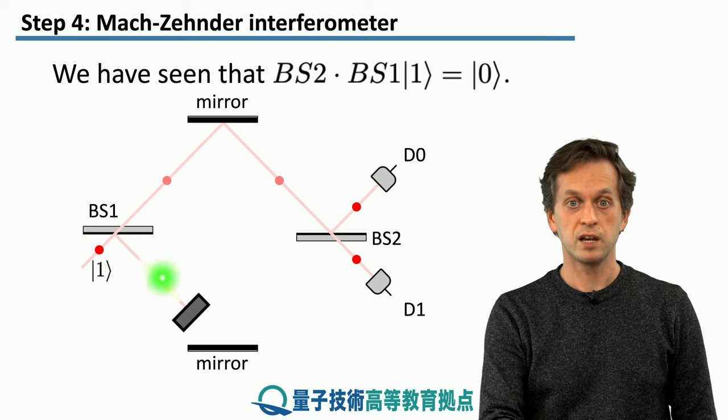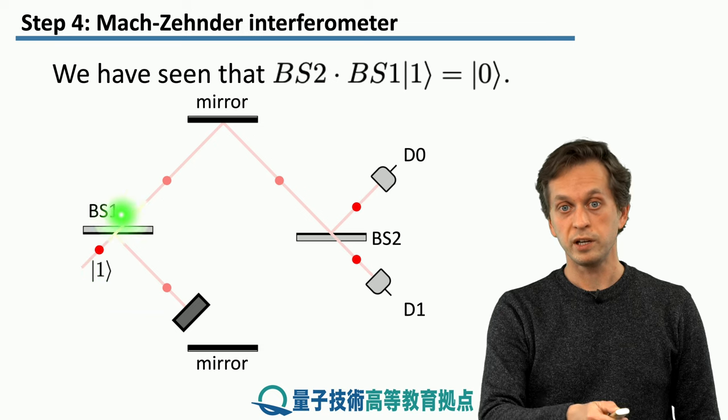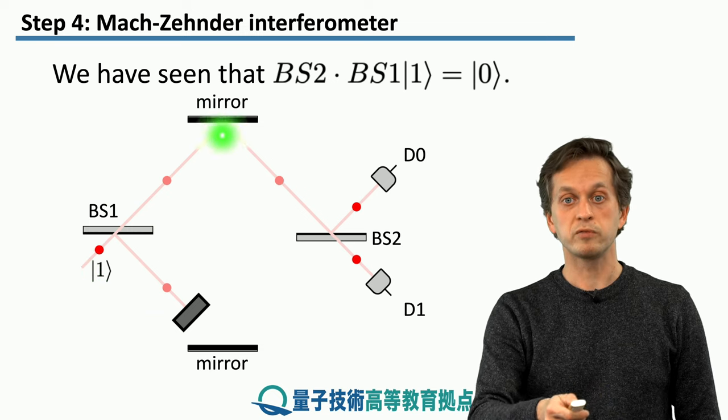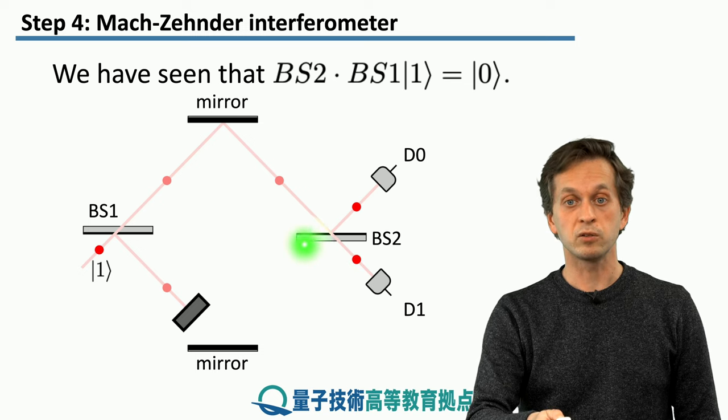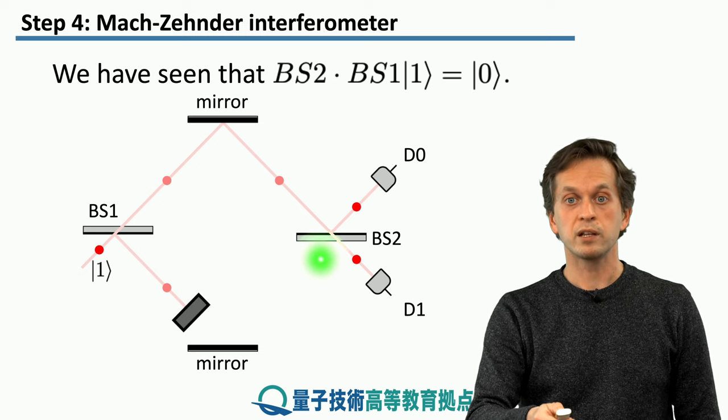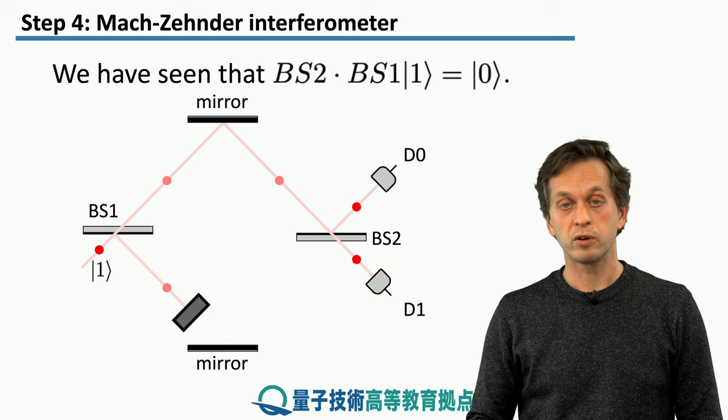If it does get reflected, then it just gets absorbed and we don't get any clicks. However, if it gets transmitted and it goes through, it bounces off the mirror and it is incident onto the second beam splitter. Where again, it has an equal probability of being reflected or passing through the beam splitter. Therefore, it has a probability of being detected by both the detector D0 and the detector D1.